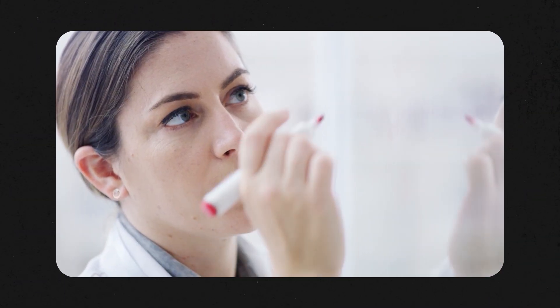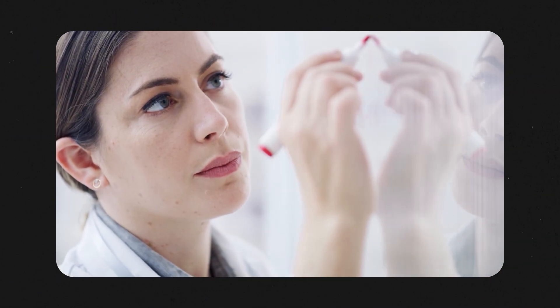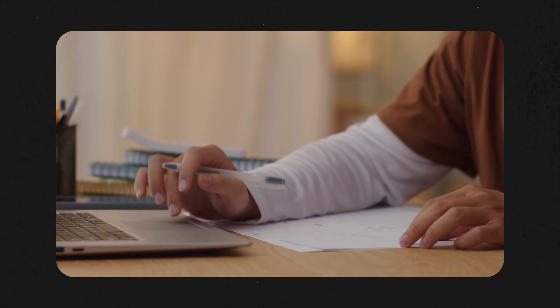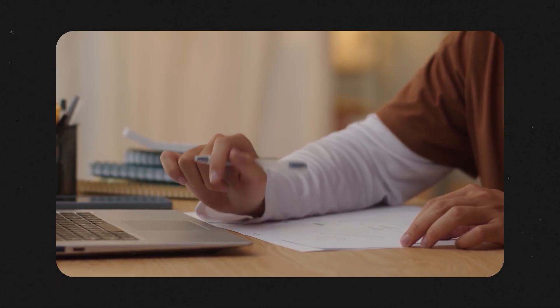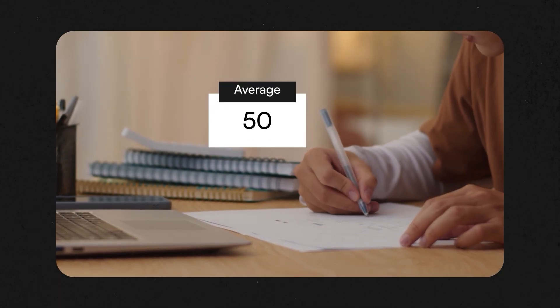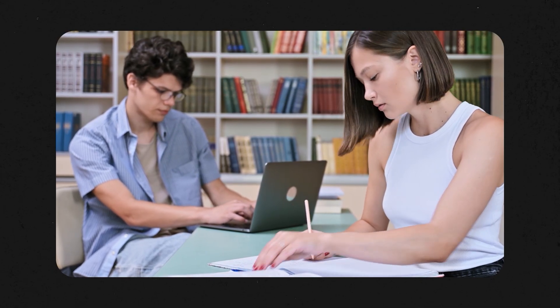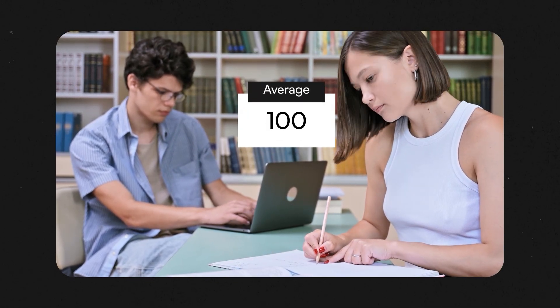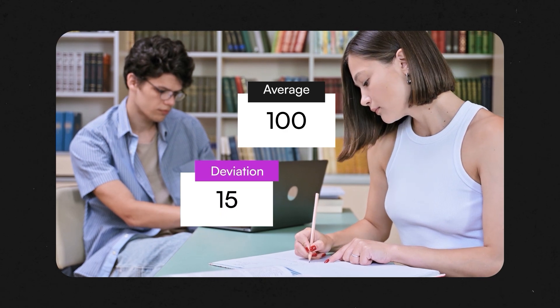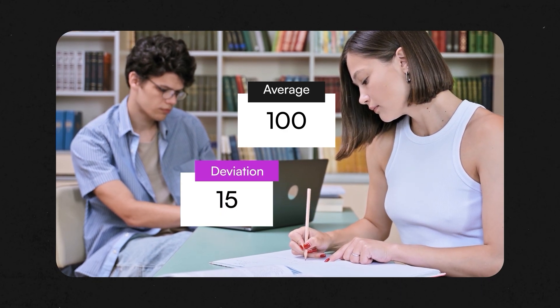The index scores and the overall IQ are calculated by a standardized weighted average that prevents any subtest from having too much influence over the final score. This scoring procedure has been standard for intelligence tests for decades. Subtests and index scores are T scores with an average of 50 and a standard deviation of 10. Global IQ is on a scale that has an average of 100 and a standard deviation of 15, which is the typical scale for intelligence tests.